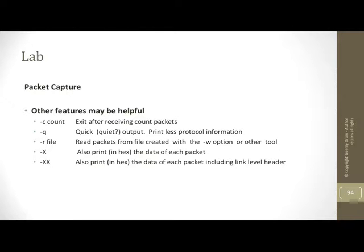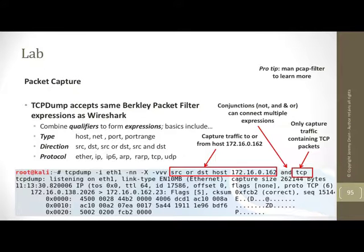tcpdump and Wireshark both use Berkeley Packet Filter syntax for filtering. On the slide we see a few different filters. For example, filtering on a host IP address captures traffic in both directions — source or destination. We can also use the conjunction 'and' to add another filter checking whether the layer four protocol is TCP, which would prevent capturing UDP or other layer four packets.